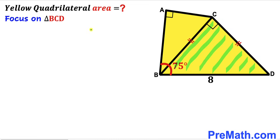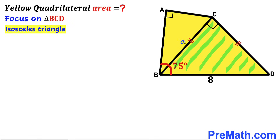Let's focus on triangle BCD. We can see this is an isosceles triangle since BC equals CD. I'm going to label each of these equal sides as lowercase a. Since this is an isosceles triangle, the base angles are congruent — so if one base angle is 45 degrees, the other must be 45 degrees as well.